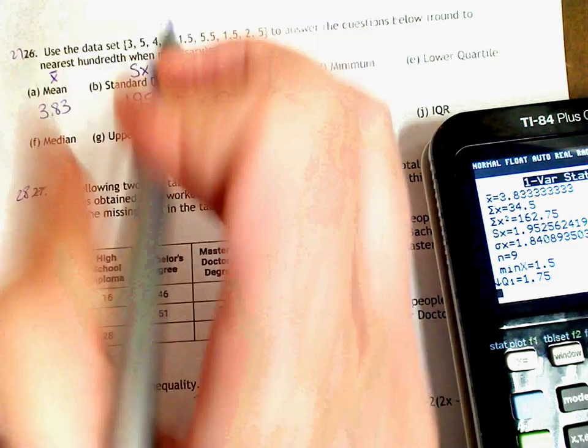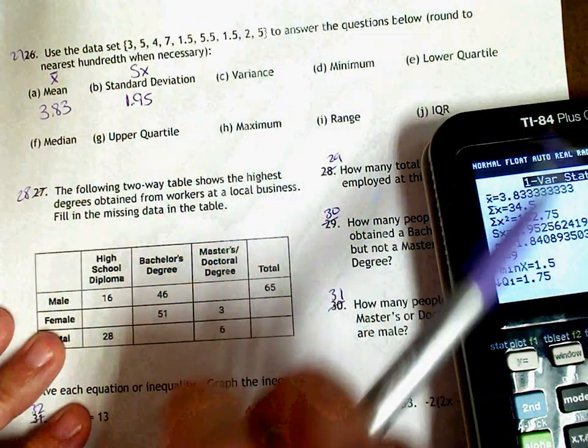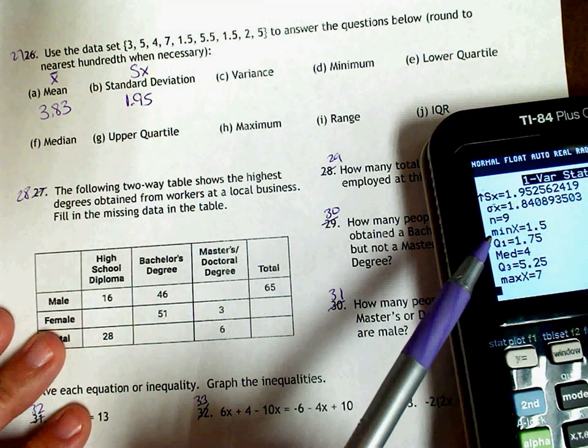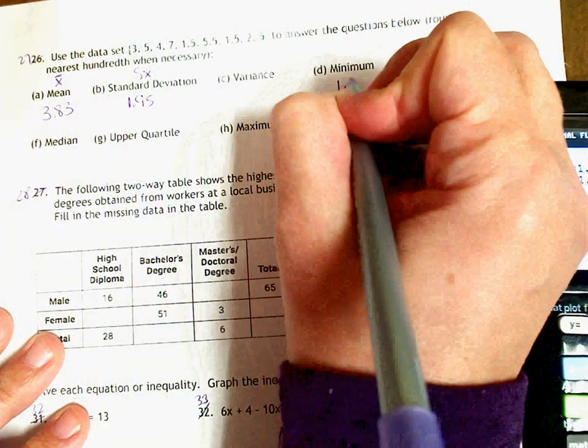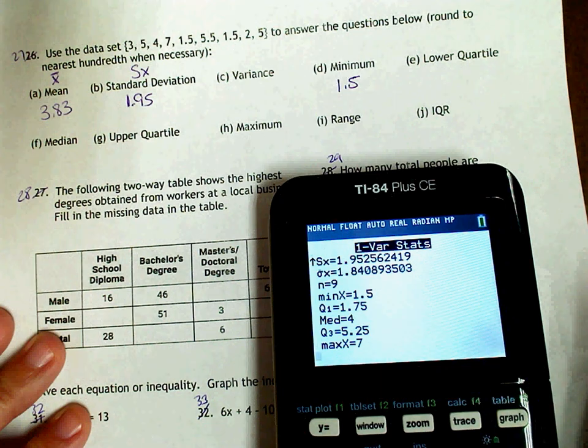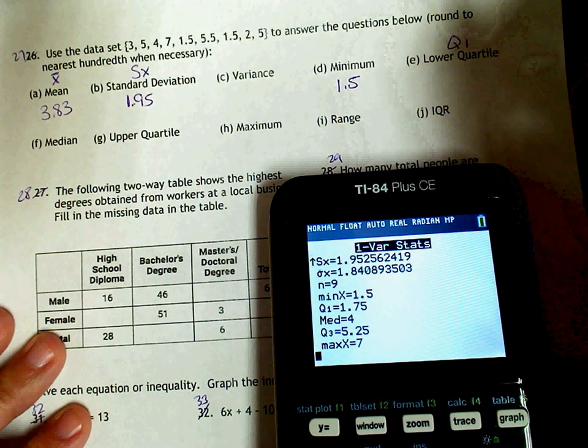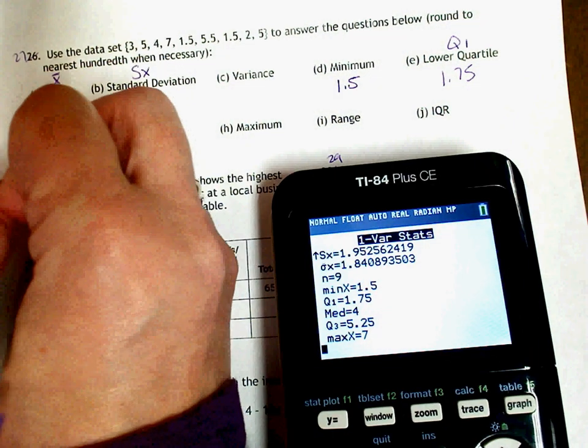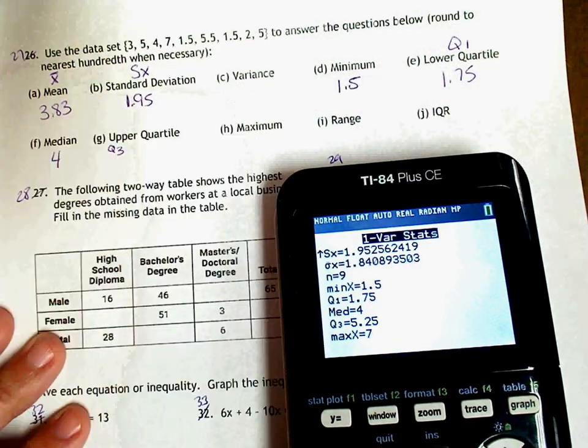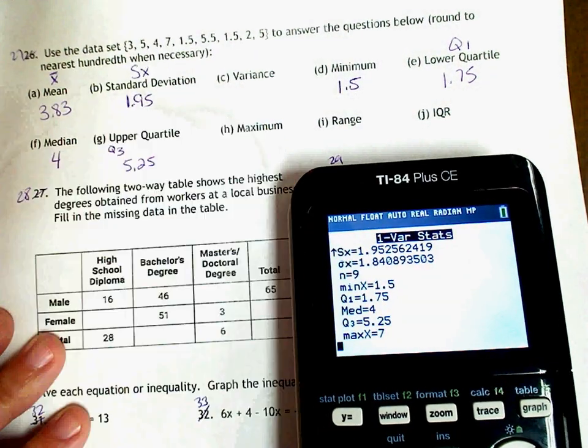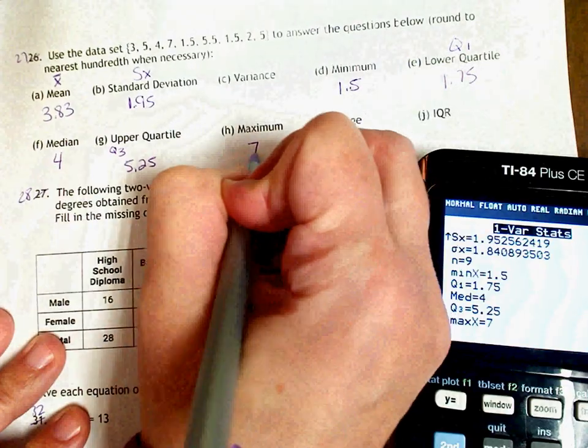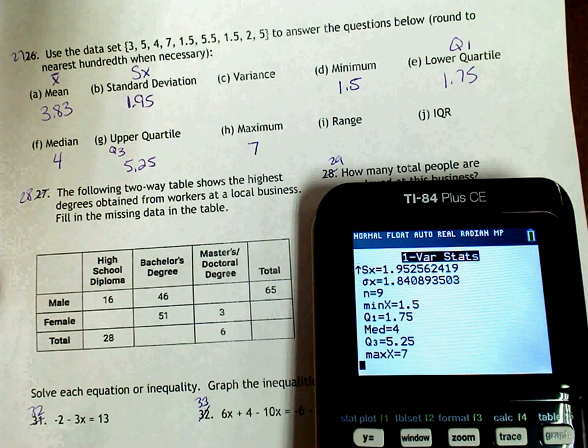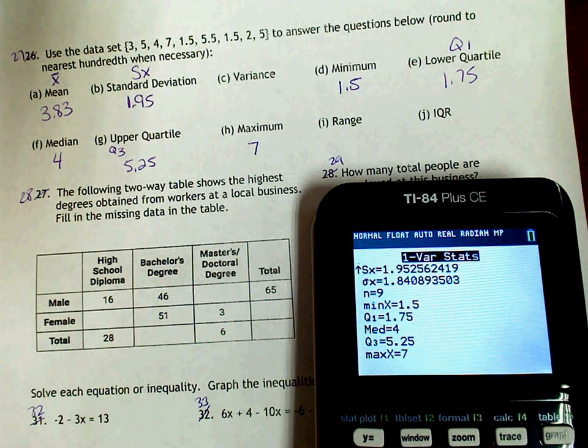We are going to come back to the variance in just a second because everything else I need is on this screen. Obviously, the minimum is the one that says min. So that is 1.5. And then it says lower quartile, that is Q1, which is 1.75. Your median is 4. Upper quartile is Q3, which is 5.25. And then your maximum is 7. Now, those numbers from D to H should increase or stay the same. But they should not go down. They should go up. So make sure that your numbers are increasing.